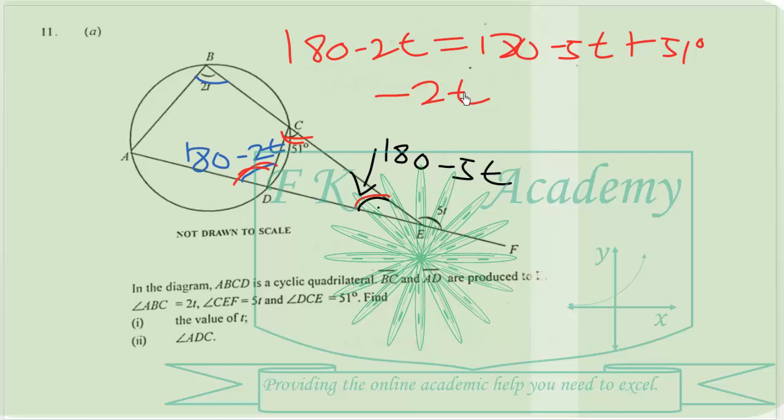So we have 3T is equal to 51. When we divide 51 by 3, we obtain 17. So we get T equal to 17.